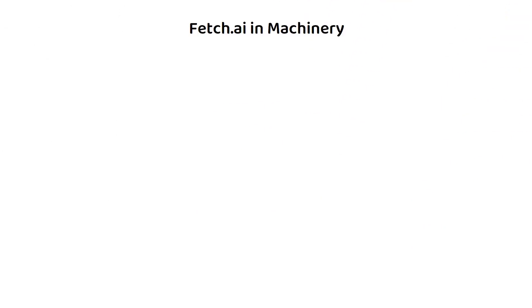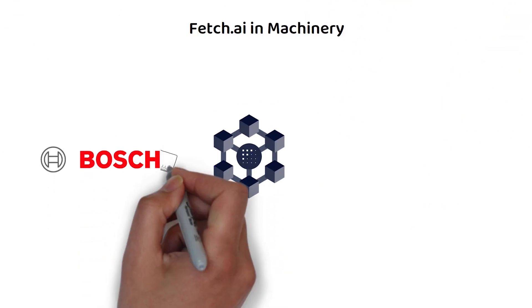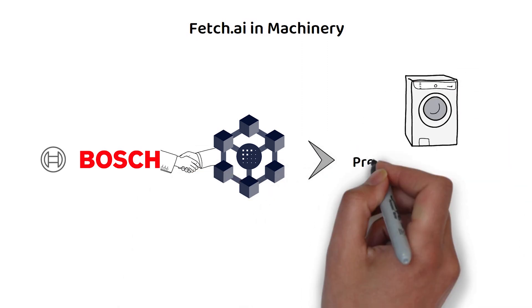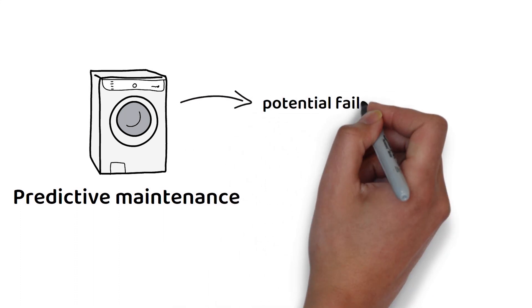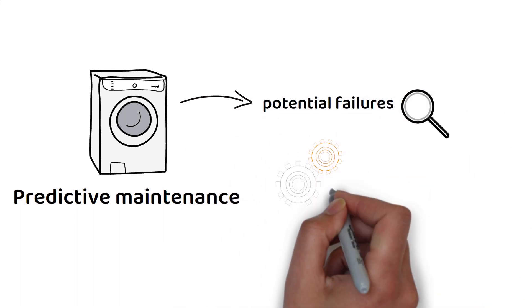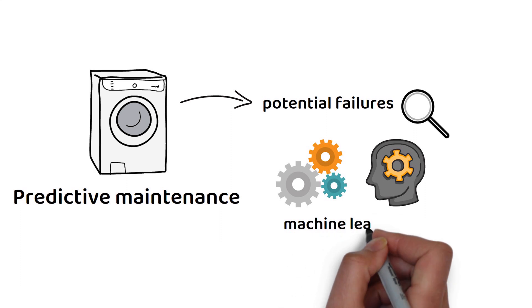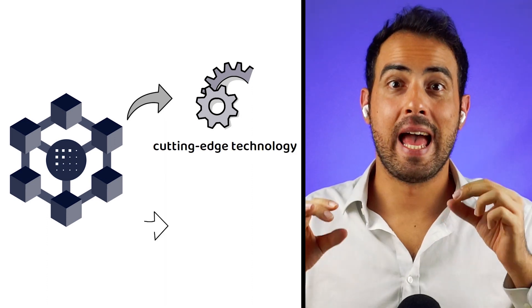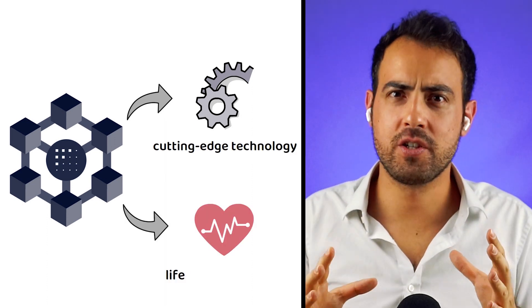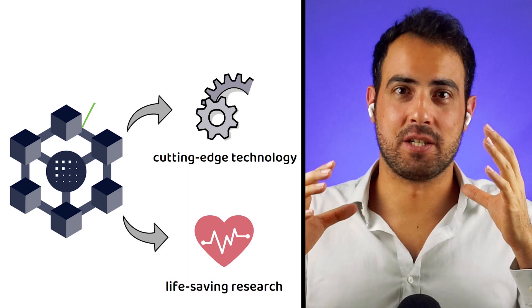Finally, Fetch.ai has partnered with Bosch to provide predictive maintenance on their products. This is a process that identifies potential failures within the machine itself, based on machine learning from Fetch.ai's collective learning. As you can imagine, with its platform being used in cutting-edge technology and potentially life-saving research, interest in the project has spiked recently.